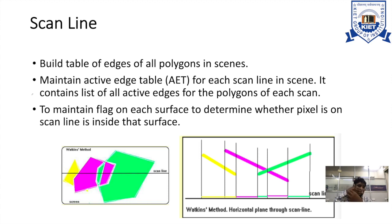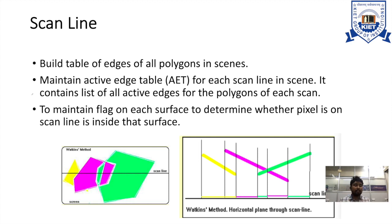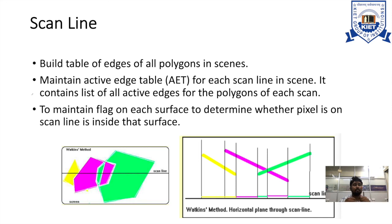Half of this part is fully visible, and from here this part is partially visible. So these are the visible surfaces — this is a visible surface, this is also a visible surface, this is also a visible surface. Scanline means we are going to traverse through line — horizontally on the screen — and we are going to identify which surface is visible.